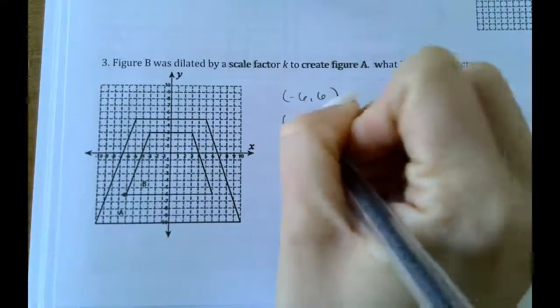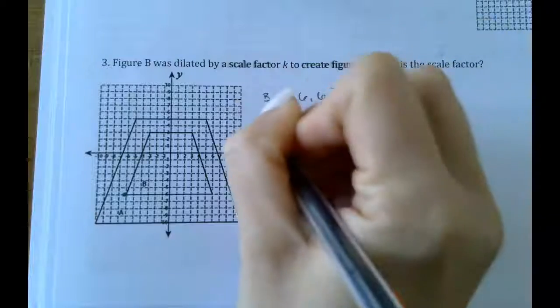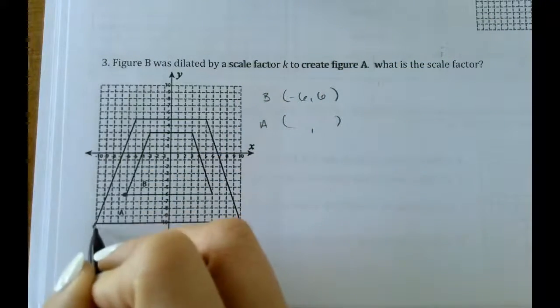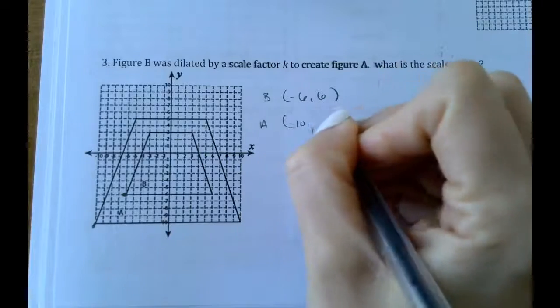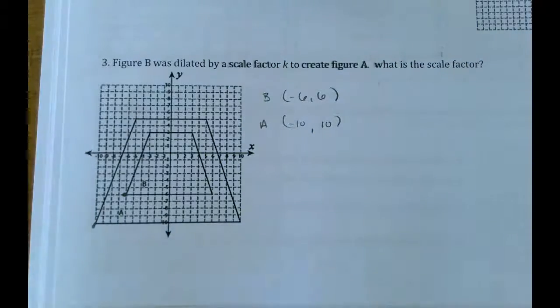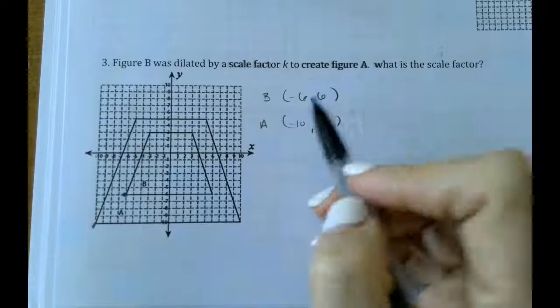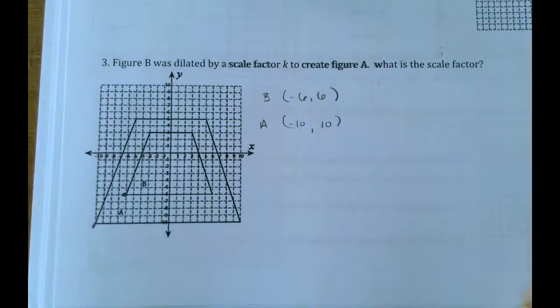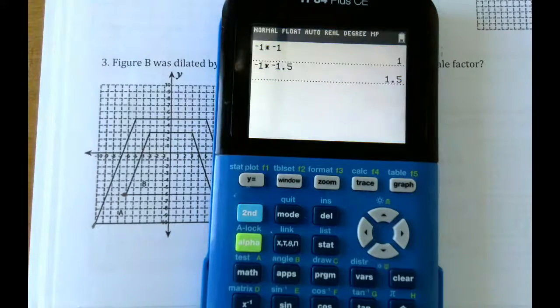The new point, so I'll put B there. The new point A would be here and that's at negative 10, positive 10. So we have to figure out how do we get from negative 6 to negative 10? What do we multiply by? So this is one where you can kind of guess and check in your calculator.